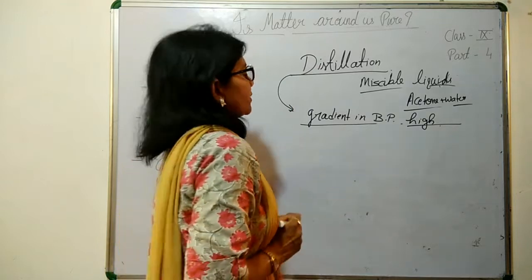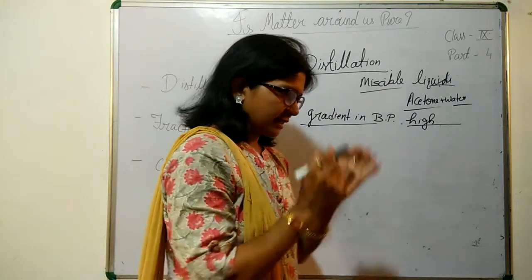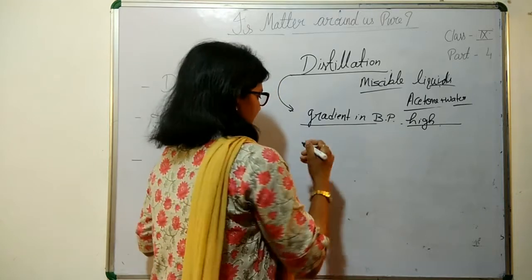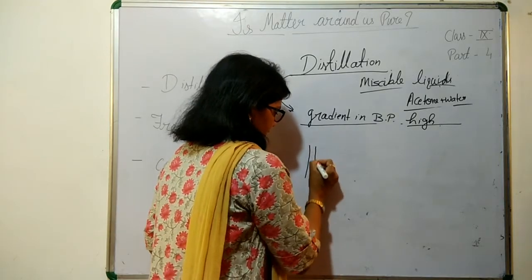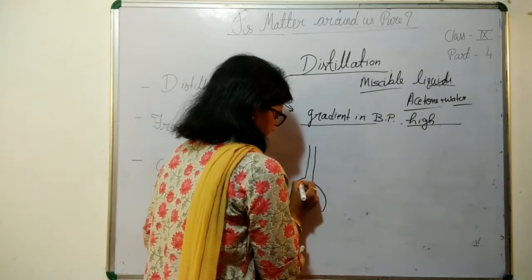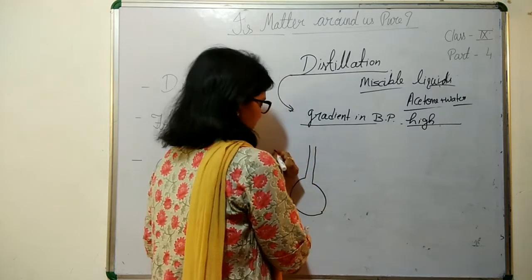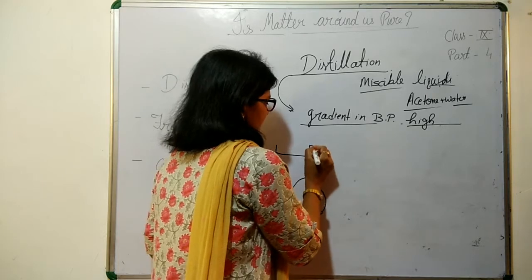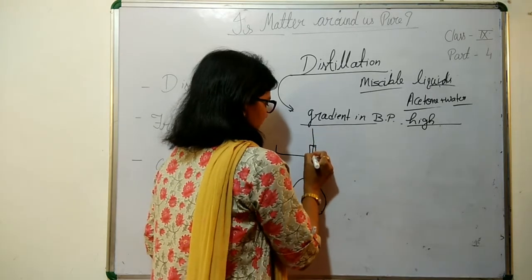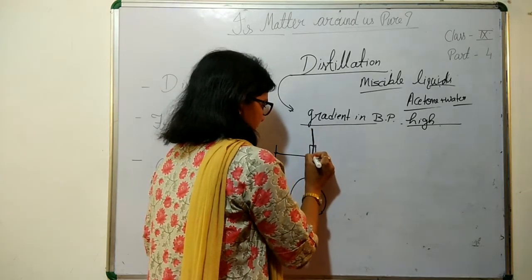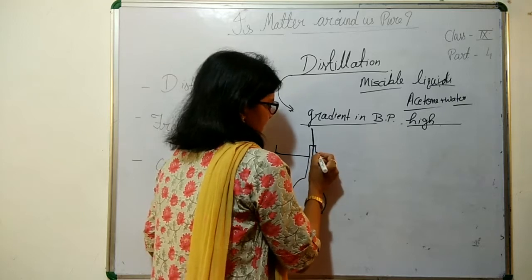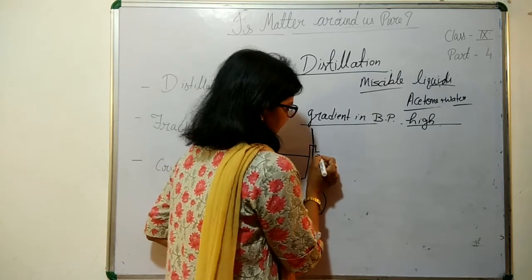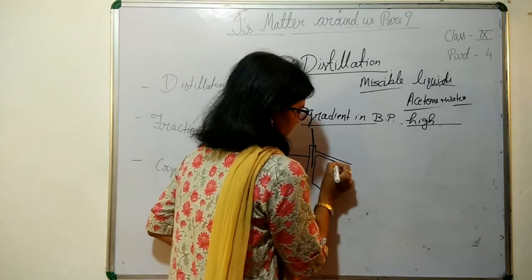Now what we do here — there is a special setup for this. Here it is a distillation flask put on a stand. Here it is a knob having a thermometer, then there is an outlet.